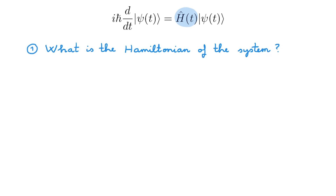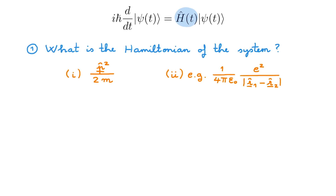Writing down Hamiltonians is actually relatively straightforward. On the one hand we have the kinetic energy of each particle in our system, and in a non-relativistic setting, the kinetic energy of each particle is given by the momentum squared divided by 2 times the mass of the particle. The second contribution to the total energy is the potential energy, and this term takes a different form for every system. For example, if we have two electrons each of charge e, then the potential energy is given by the Coulomb interaction. You can find many more examples in our other videos where we build the Hamiltonians for systems ranging from atoms all the way to materials.